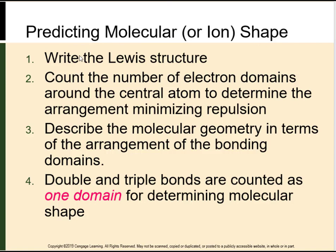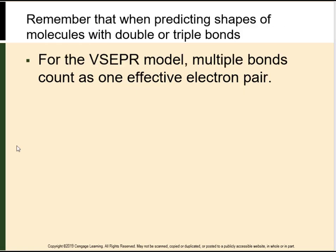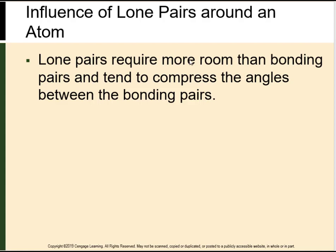To predict molecular shape: write out the Lewis structure, count the number of electron domains around the central atom, and describe the geometry in terms of that arrangement. Remember that double and triple bonds are counted as one domain. Lone pairs are space hogs — they require more room than bonding pairs and tend to compress the other bond angles.